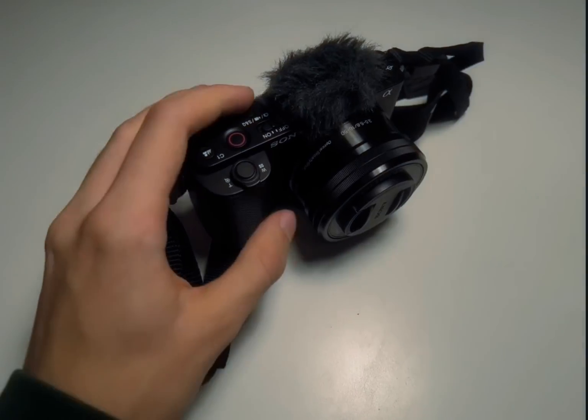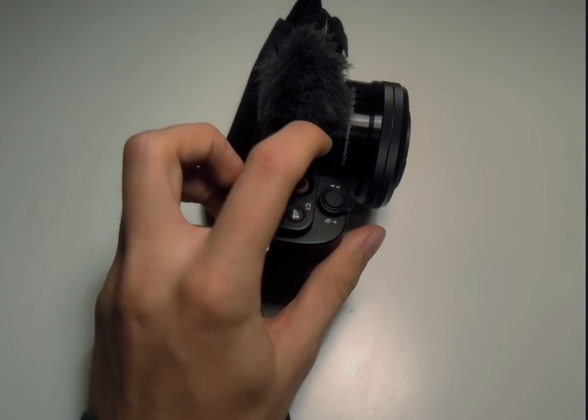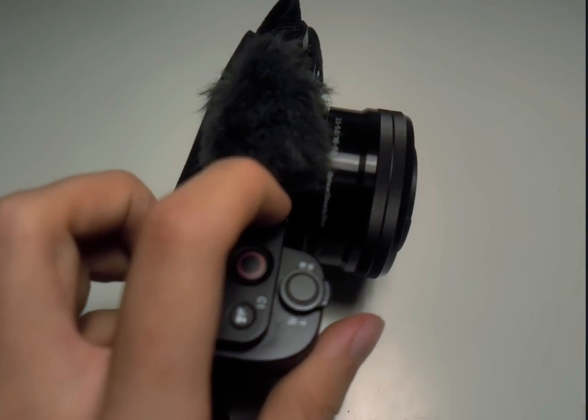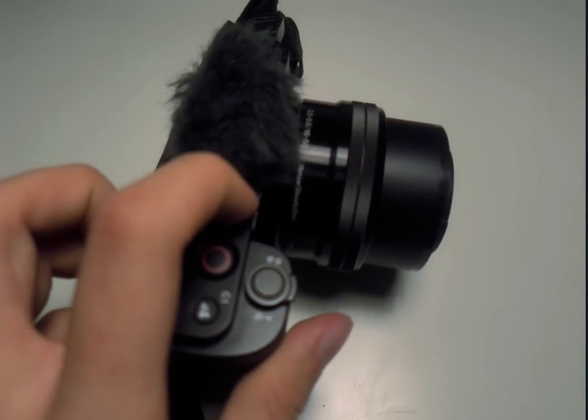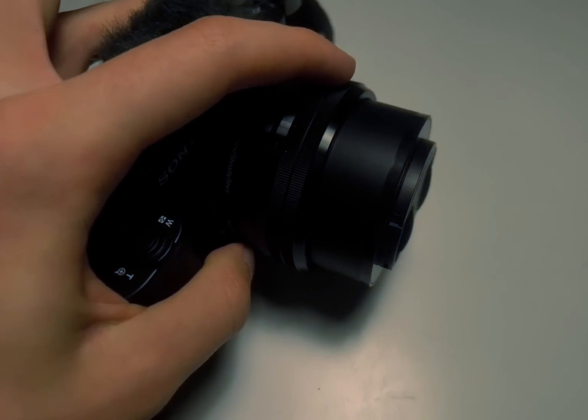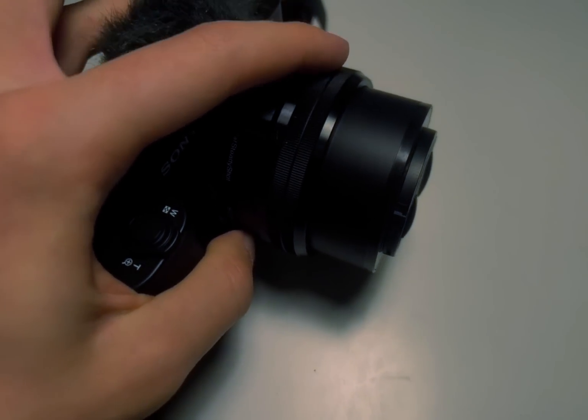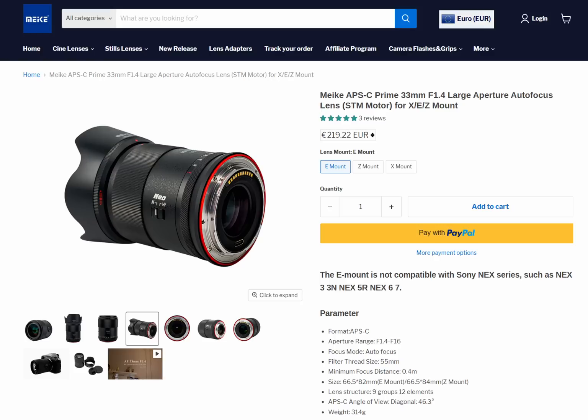Hello and welcome back to another video on this channel. This is my Sony ZV-E10. Recently the kit lens got a small hit and now it makes these noises whenever it zooms in and out. Of course it does its job still fine, but I wanted to upgrade to some better glass anyways.